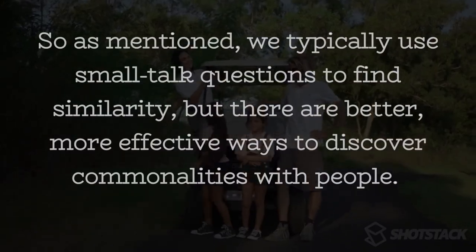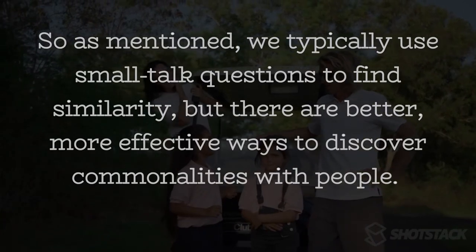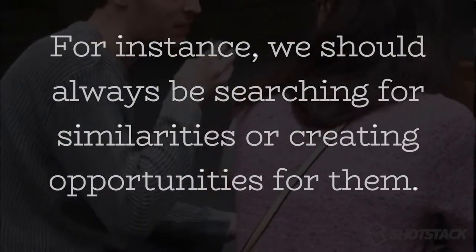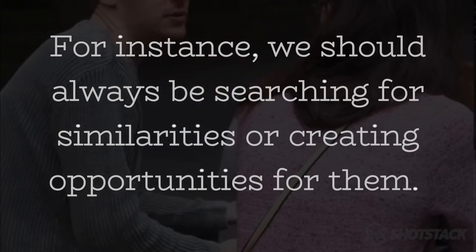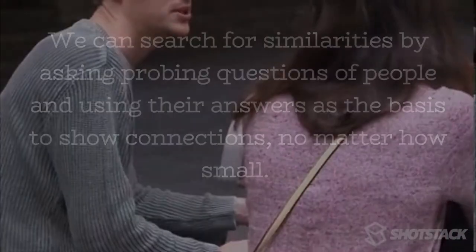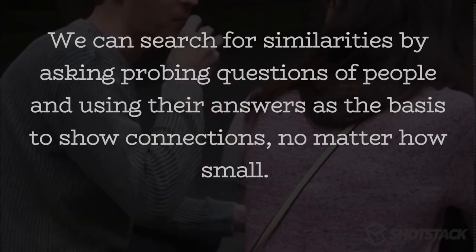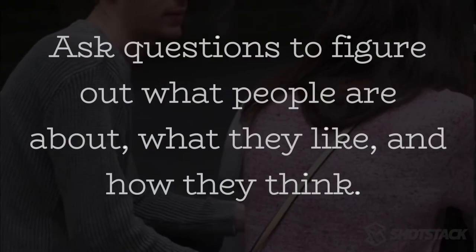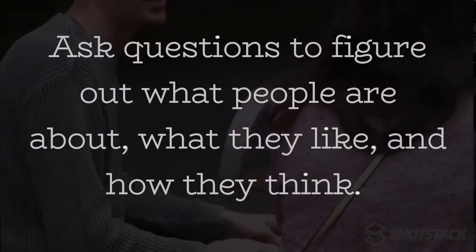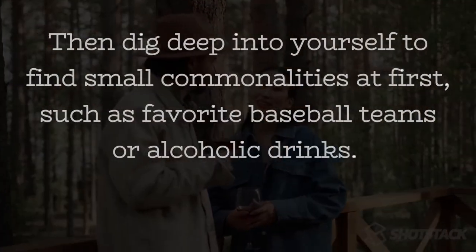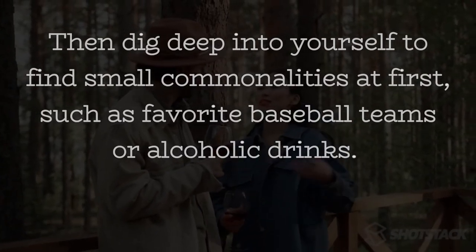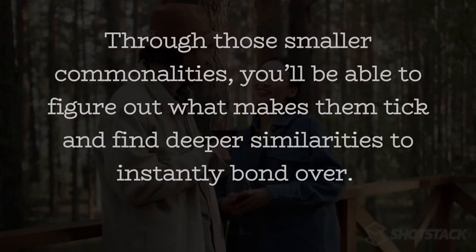So, as mentioned, we typically use small talk questions to find similarity, but there are better, more effective ways to discover commonalities with people. We should always be searching for similarities or creating opportunities for them — both take effort and initiative. We can search for similarities by asking probing questions and using their answers as the basis to show connections, no matter how small. Ask questions to figure out what people are about, what they like, and how they think. Then dig deep into yourself to find small commonalities at first, such as favorite baseball teams or alcoholic drinks. Through those smaller commonalities, you'll be able to find deeper similarities to instantly bond over.